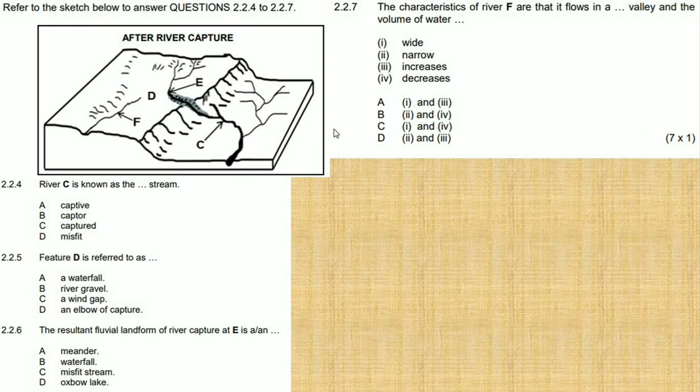So 2.2.4: You have now after the river captures, a diagram showing where river capture has taken place. Answer questions 2.2.4 to 2.2.7 referring to the sketch. So river C is known as there. Let's see, this is the river C. River C, remember river capture has now taken place, meaning it has now overtaken the waters of river B.